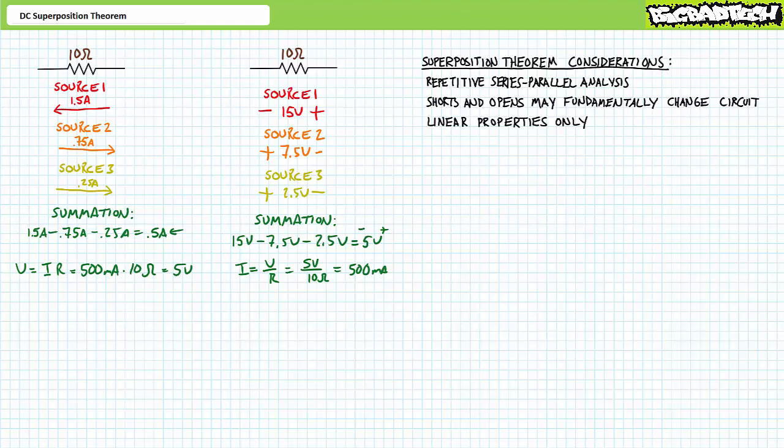Finally, the principal limit of the superposition theorem is that of linearity — only linear sources and linear properties like voltage and current can be summated using the superposition theorem. This is to suggest that Ohm's law for linear sources is acceptable, whereas power is not. Power is the product of voltage and current and is not a linear property — rather geometric in nature.